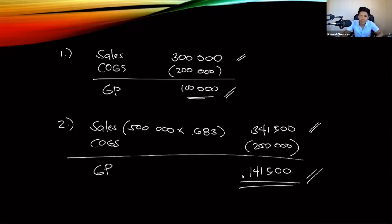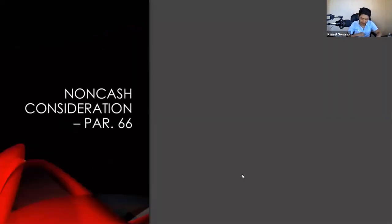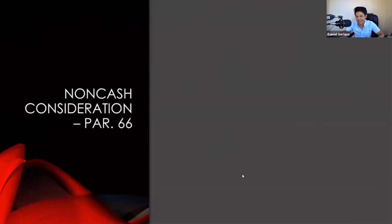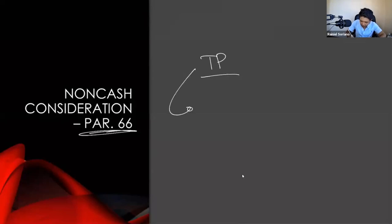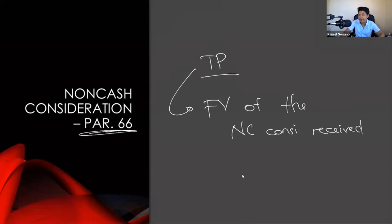The third consideration in determining the transaction price is non-cash consideration. This is when we do not receive cash — whether today or in the future — but instead receive a non-cash consideration such as property, plant and equipment, land, or buildings. According to paragraph 66 of IFRS 15, if we receive a non-cash consideration, the transaction price equals the fair value of the non-cash consideration received.